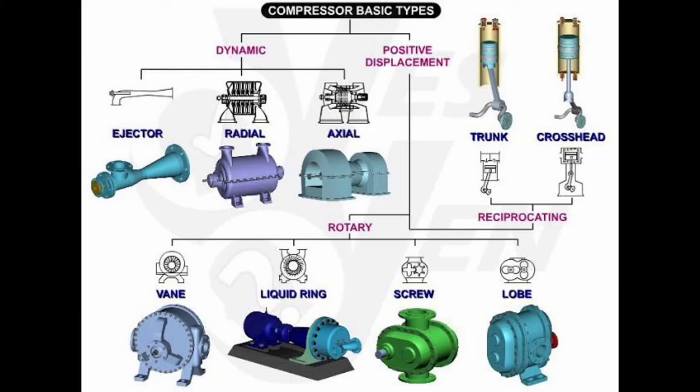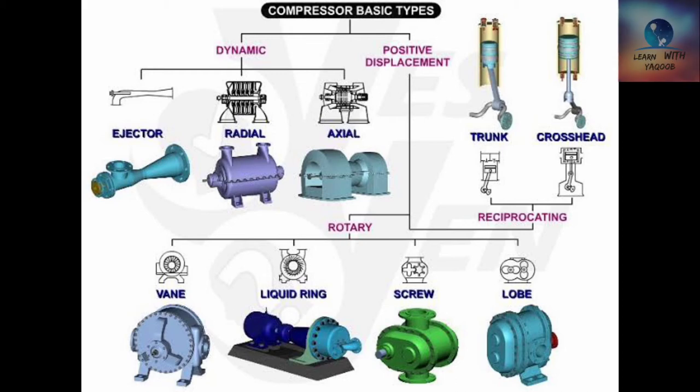In the sections below we outline and present the common compressor types. The types covered include piston, diaphragm, helical screw, sliding vane, scroll, rotary lobe, centrifugal, and axial. Due to the nature of the compressor designs, a market also exists for the rebuilding of air compressors, and reconditioned air compressors may be available as an option over a newly purchased compressor.